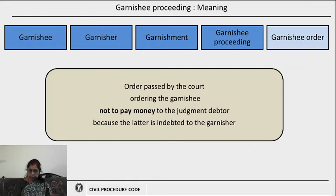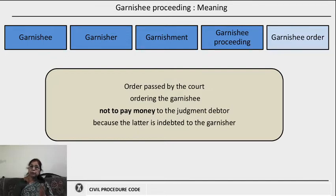The garnishee order directs the garnishee not to pay money to the judgment debtor — because the judgment debtor is indebted to the garnisher — but instead to pay the money to the garnisher or to the court.